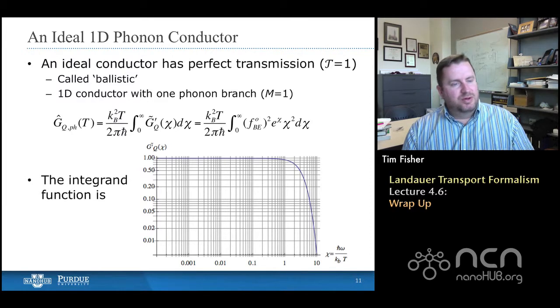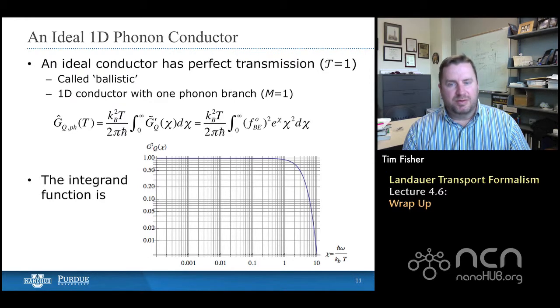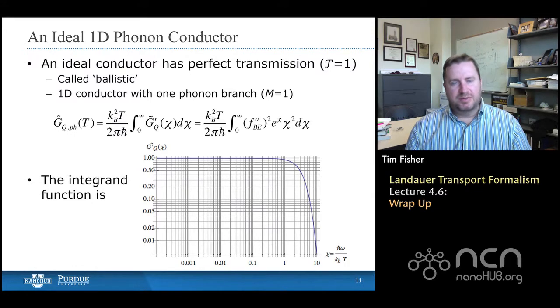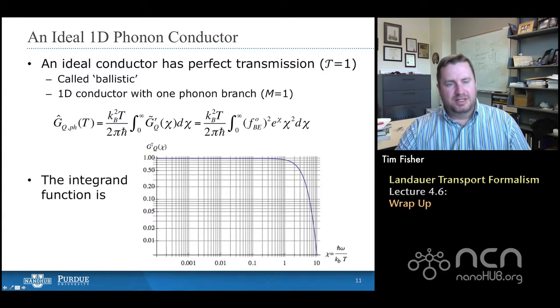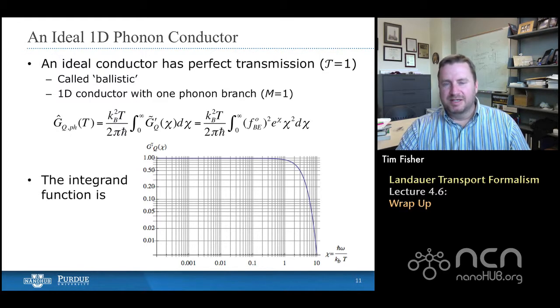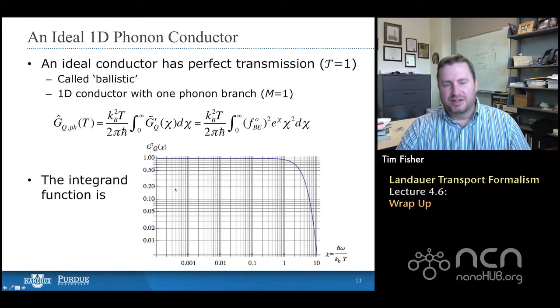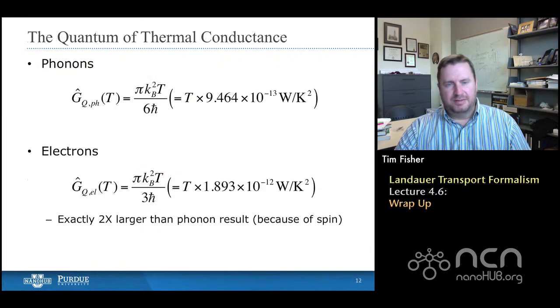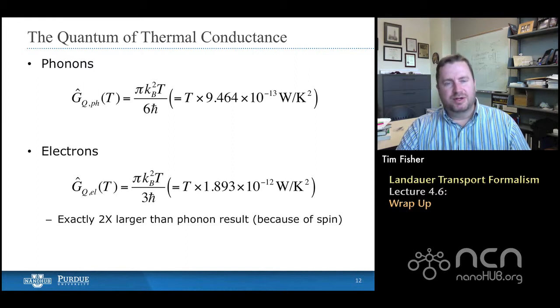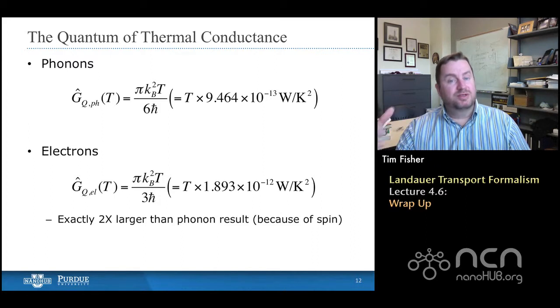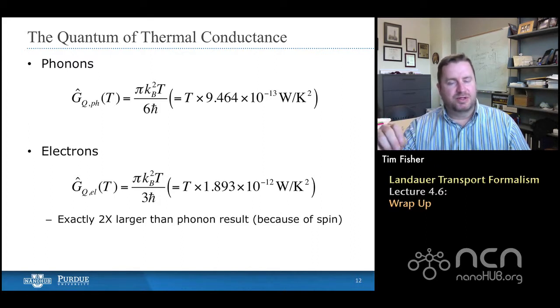So then we went from there to going back a little bit to the quantum of thermal conductance. So we're going to go back to the simplest form where we have perfect transmission. And we have a one dimensional conductor. That means that M equals one. And using those assumptions, we define this G hat, which is the integrated form of G tilde, which is the normalized spectral conductance. We find that this integral can be evaluated. Again, we're essentially integrating under the curve that's shown here, that we had a couple of slides ago. And when we do that, we find the quantum of thermal conductance. And it's a number. It's a number times a temperature. In this case, the fact that it includes temperature, the quantum of thermal conductance is directly proportional to temperature.